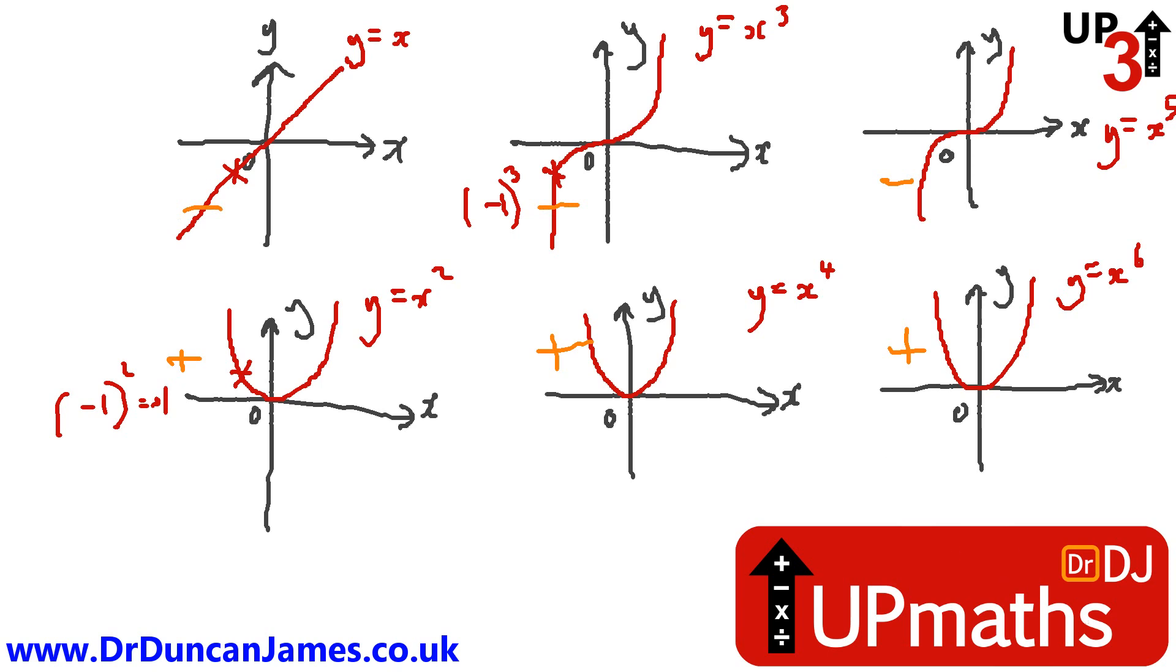I just want to make a couple more observations, then we'll finish. First observation is, I think it's quite interesting to notice that the graph y equals x looks really quite similar to the line y equals x cubed, except that x cubed goes off steeper, but a lot of similarities between the two.